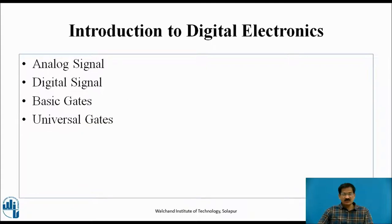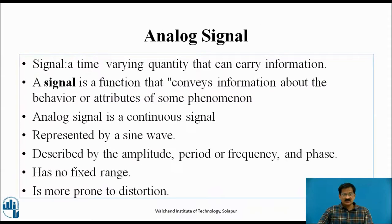Before going to flip-flops, we must have knowledge of analog and digital signals. A signal is a time-varying quantity that can carry information — a function that conveys information about the behavior or attributes of some phenomenon. An analog signal is a continuous signal, represented by a sine wave, described by amplitude, period or frequency, and phase.